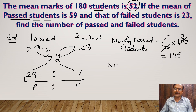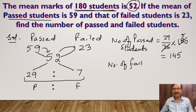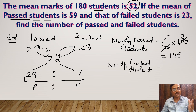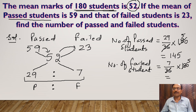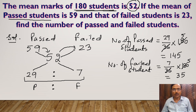For the number of failed students, you can either subtract 145 from 180, or use the ratio directly: 7 out of 36, times 180. Again 36 cancels 180 five times, so 7 × 5 = 35. The number of failed students is 35.